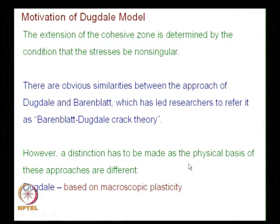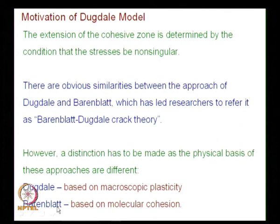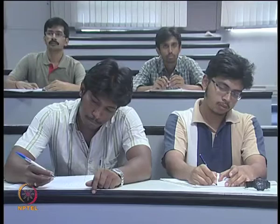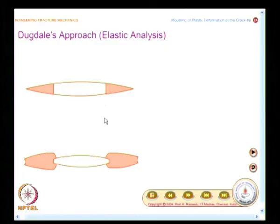These have different physical bases. The physical basis of Dugdale's model is macroscopic plasticity. On the other hand, the Barenblatt theory is based on molecular cohesion. Now we will take up the mathematical development of Dugdale's approach.